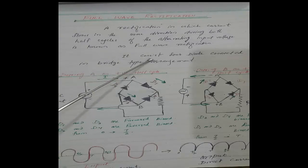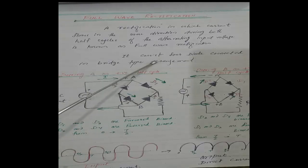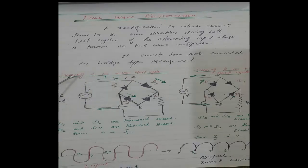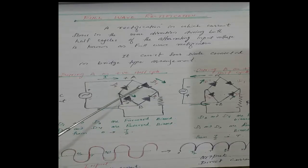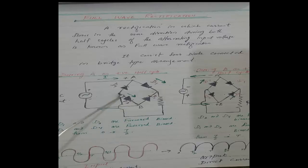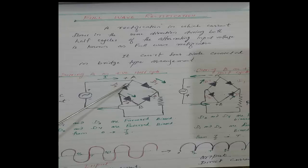Circuit diagram को समझने के लिए: it consists of four diodes — इसके पास चार diodes हैं — connected in bridge type arrangement। During positive half cycle जब a positive है और b negative है, तो चारों diodes D1, D2, D3, D4 में से D1 और D3 का एक end positive है। D2 और D4 का end negative है। जब a positive था तो circuit में current एक specific direction में flow करेगा।